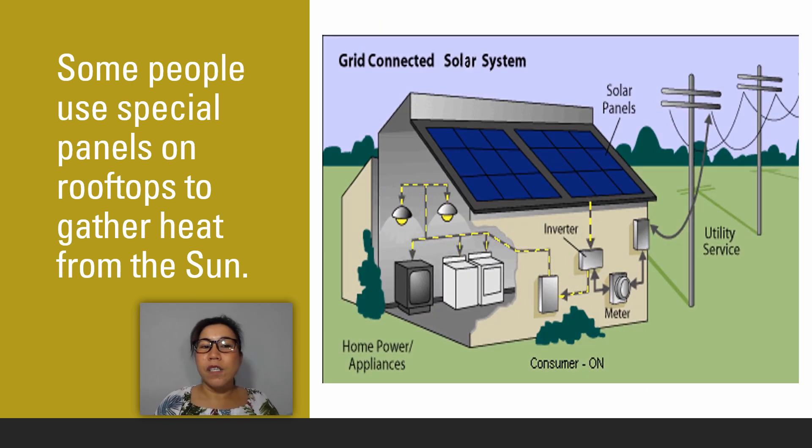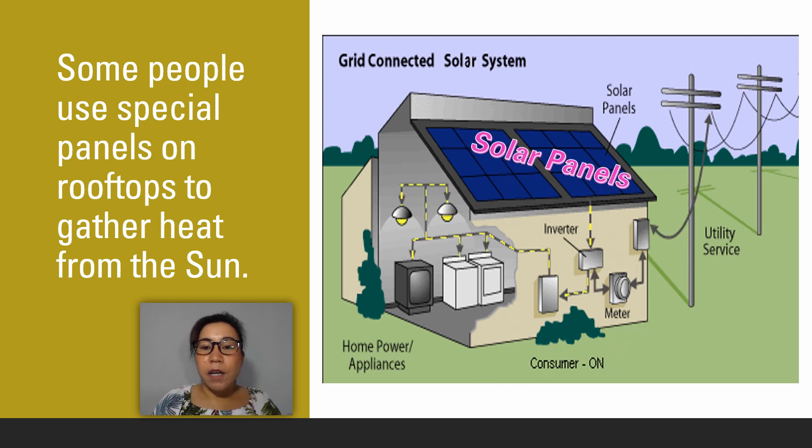Some people use special panels on rooftops to gather heat from the sun. We call them solar panels. These panels gather heat from the sun and convert that heat into electricity that makes their appliances at home work.